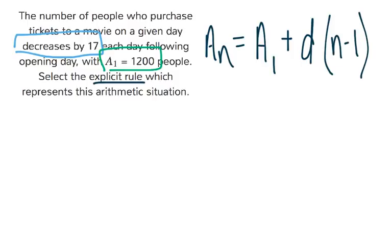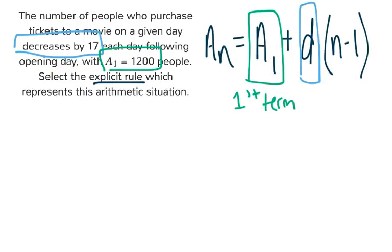So again, this a sub 1 is just the first term. D is the common difference from one term to the next.